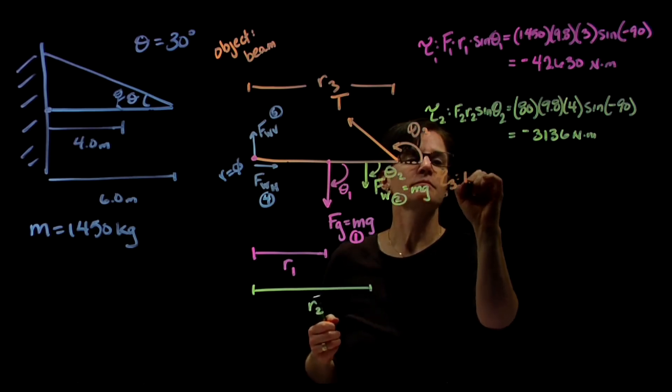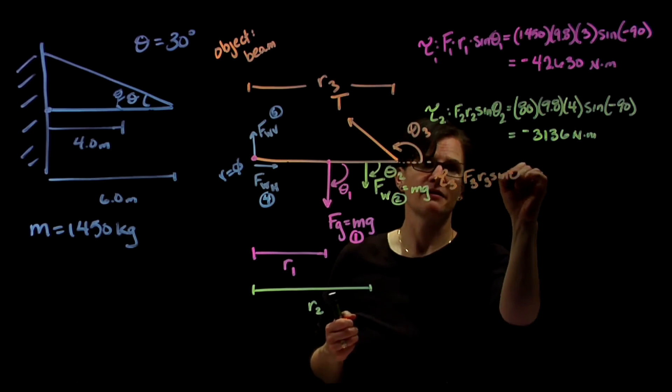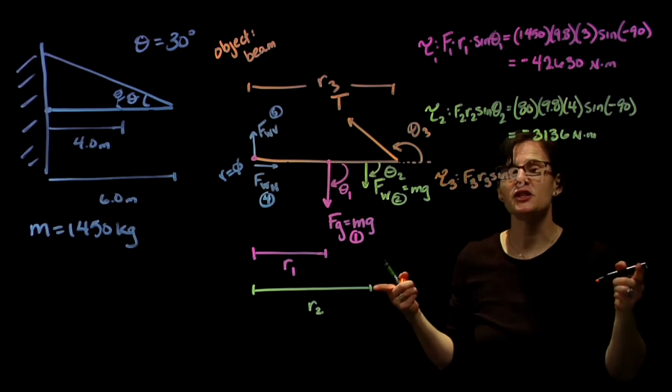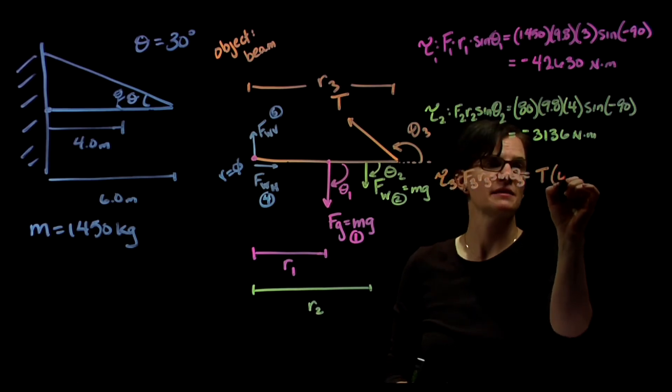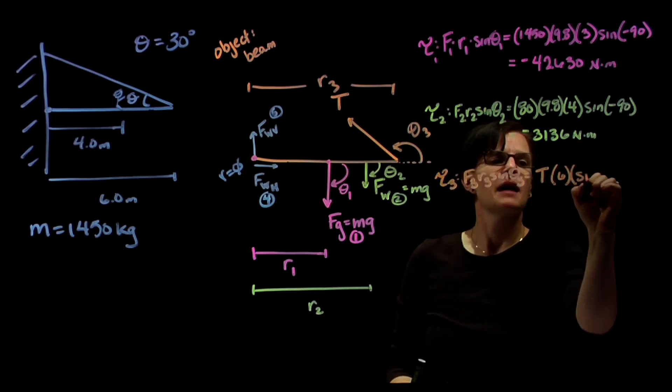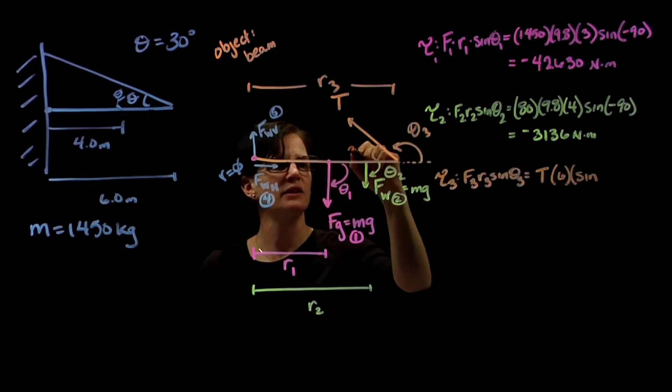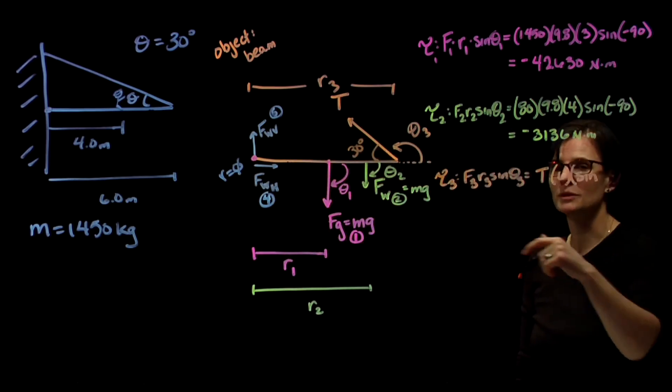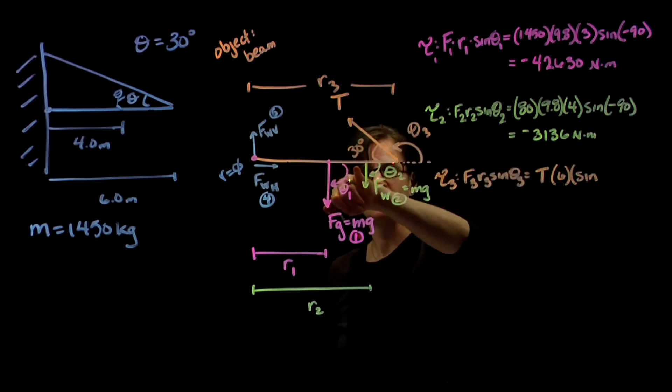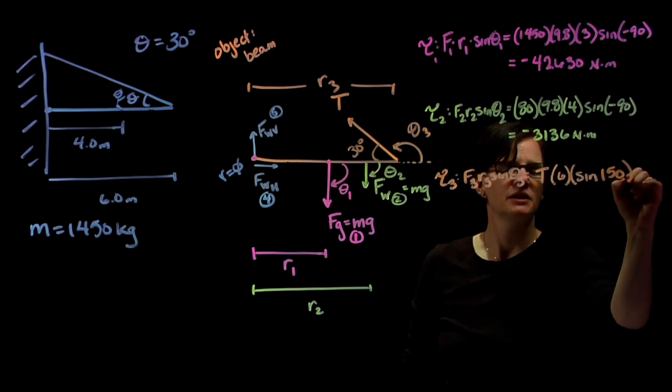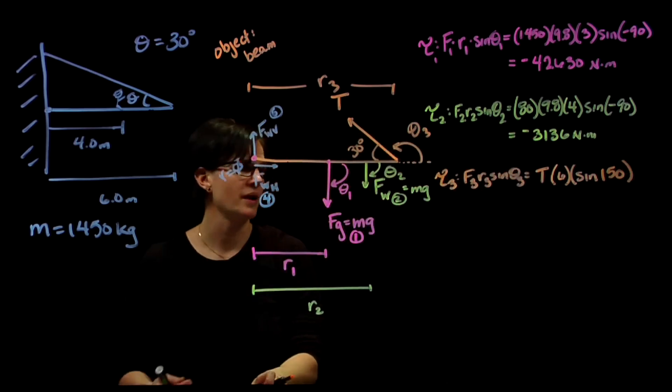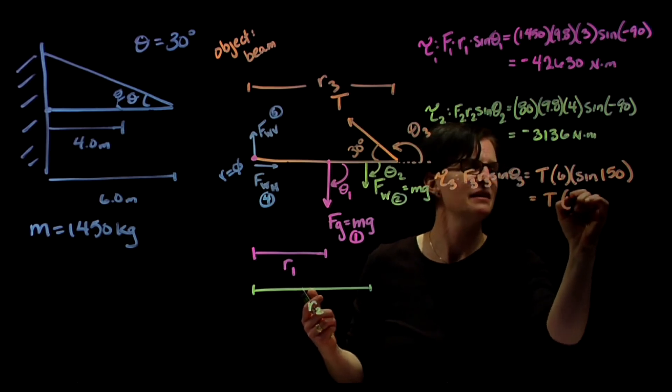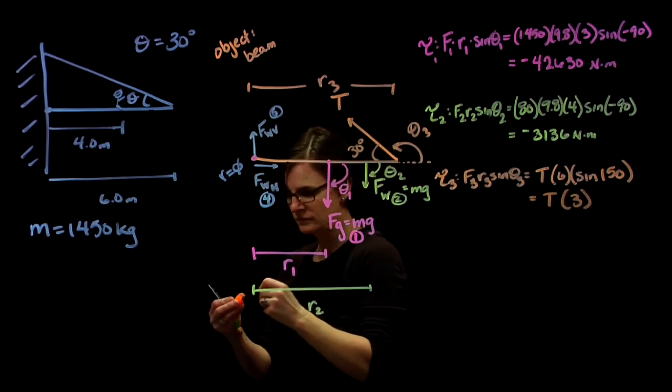Torque number three, that's force three, radius three, sine of theta three. My force, I don't know, it's tension T. My radius, that tension is acting at the full length of the beam, so that has a radius of six times the sine of the angle. We know that this angle is 30 degrees. I'm always going to use the angle that we use to extend our right hand rule angle. So if this is 180 degrees, this angle is 150 degrees. It should be positive, it's going in the counterclockwise direction. So six times the sine of 150, we get T times three. We don't know T.